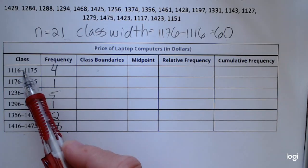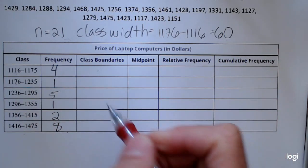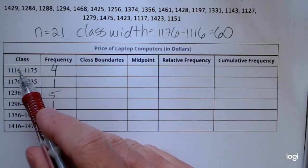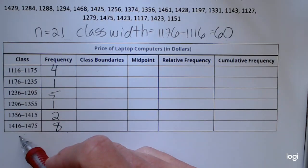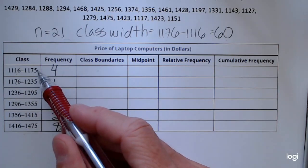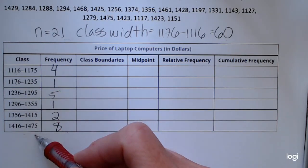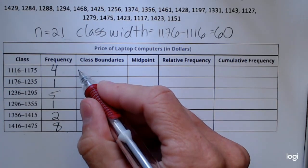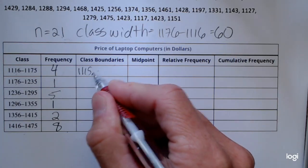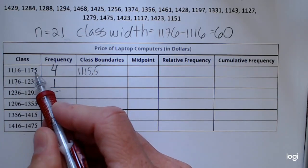The biggest thing is that the bars are the same width. That's why we have the class width to be constant for all of these classes. So to find your lower class boundaries, all you do is subtract 0.5 from your lower class limits, and for your upper class boundaries you add 0.5 to the upper class limits.